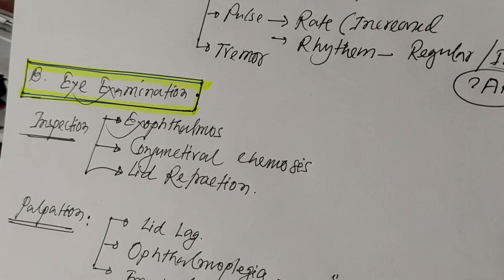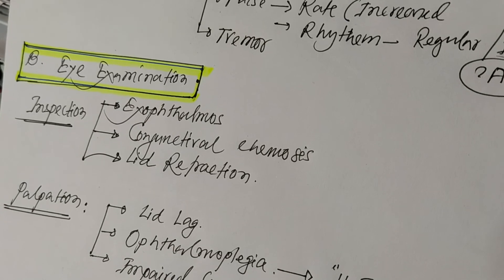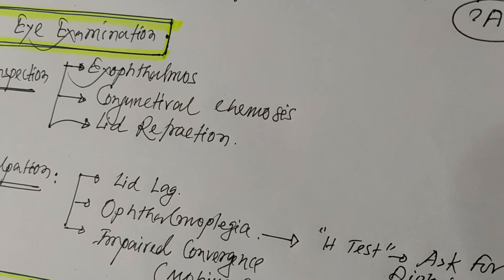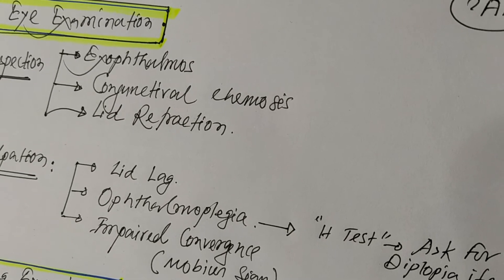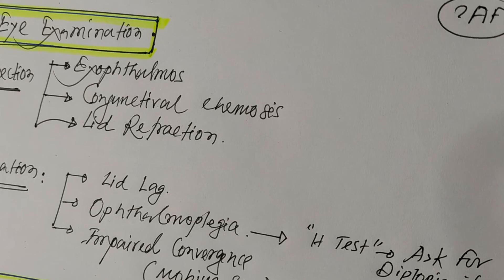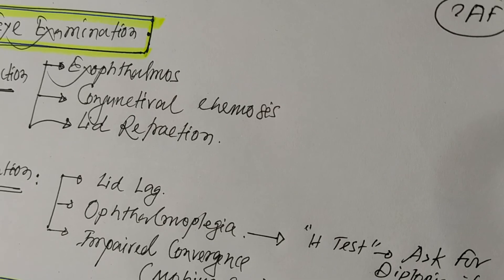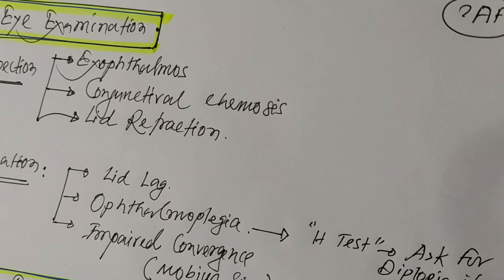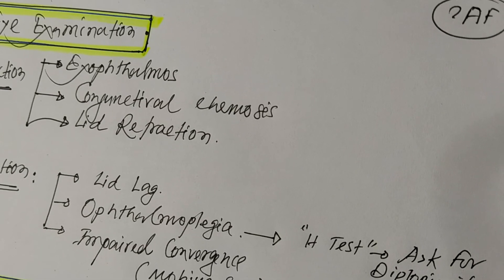The second point of eye examination is palpation. On palpation, lid lag may be present. Then ophthalmoplegia — this is tested by following a moving finger while the patient fixes their head. During the ophthalmoplegia examination, the patient is asked about diplopia when following the examining finger. The third point is impaired convergence, which is called the Mobius sign.